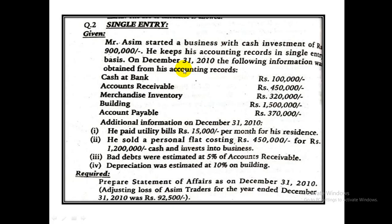This is a Board of Intermediate Examination Karachi paper. Mr. Aasim started his business with a cash investment of 9 lakh. He keeps his accounting records on single entry basis. This cash investment is the capital at start.